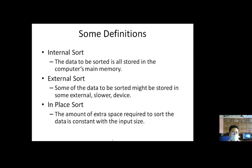In external sorting, some of the data to be sorted might be stored on some external, slower devices. When we need that data, we take a copy of it, bring it to our system, apply our algorithm, and sort this data in partial fractions or portions. This kind of sorting is called external sorting. When the whole data is stored on the system and sorted, it is called internal sorting.